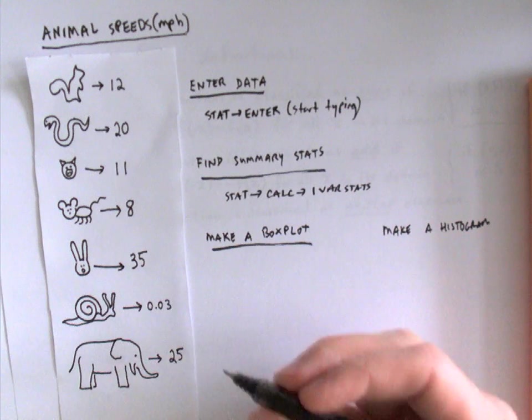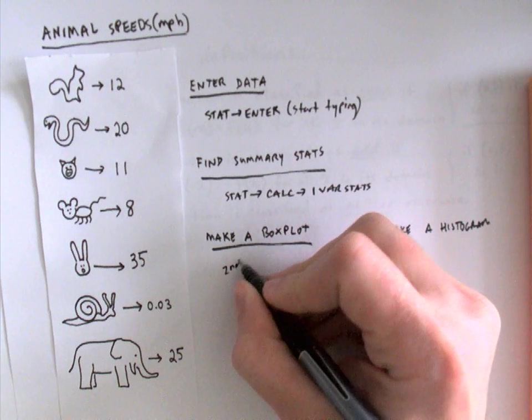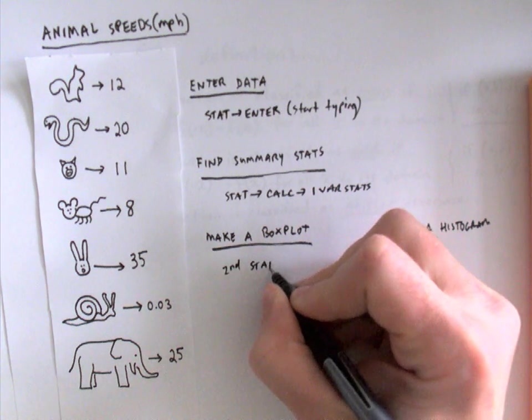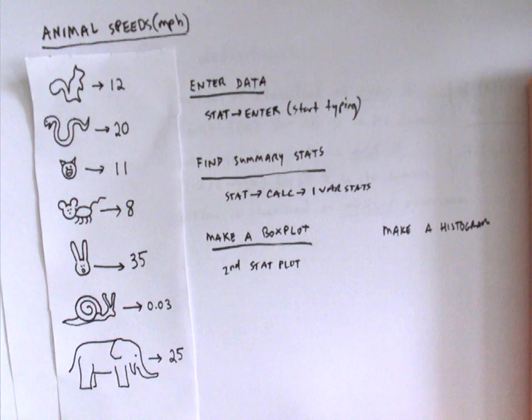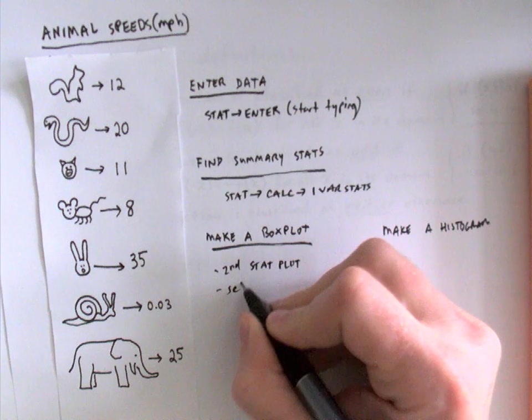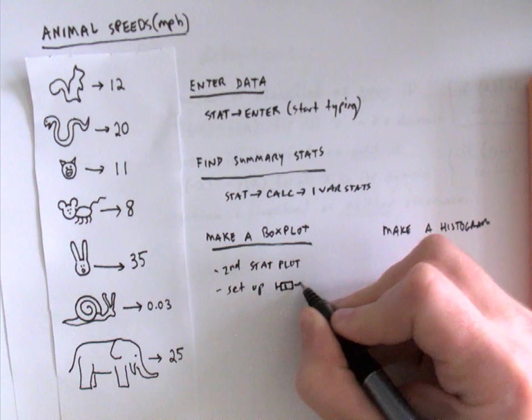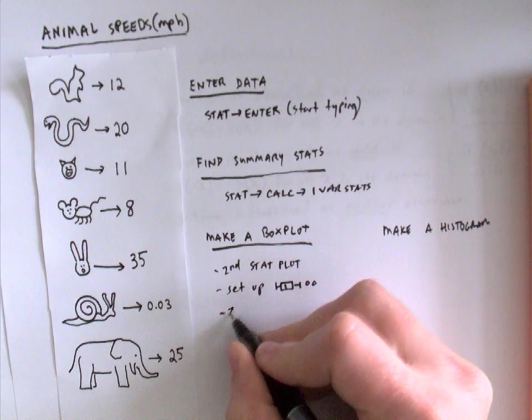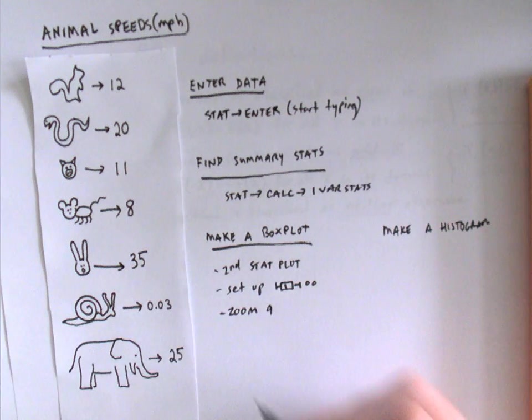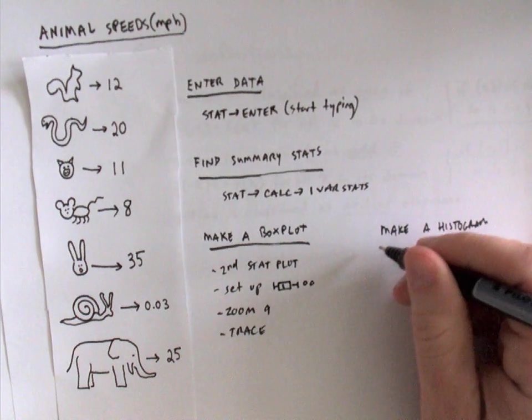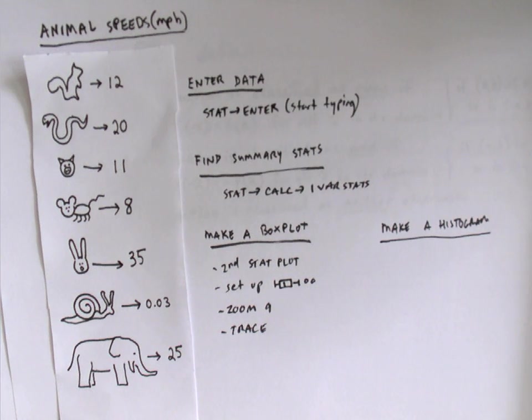Okay, so to summarize how to make a box plot, you press second stat plot, which is above y equals. You set it up so it looks like this one, the outliers shown, and then you press zoom nine. And you can trace. To make a histogram, it isn't more complicated to make a histogram, but histograms in general are usually for bigger data sets. So what we're going to do here is we're going to add a couple more creatures to our list.